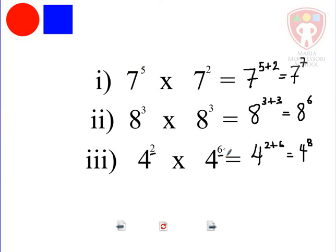are multiplying two numbers that are the same in terms of the base, then we're going to add the indices to give us the answer in exponential form.